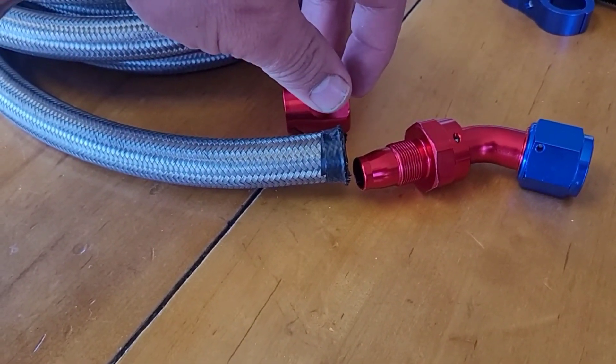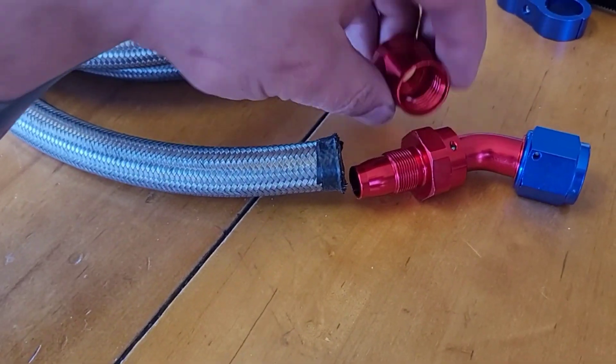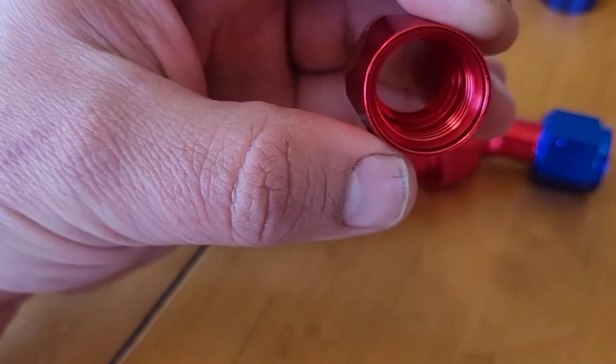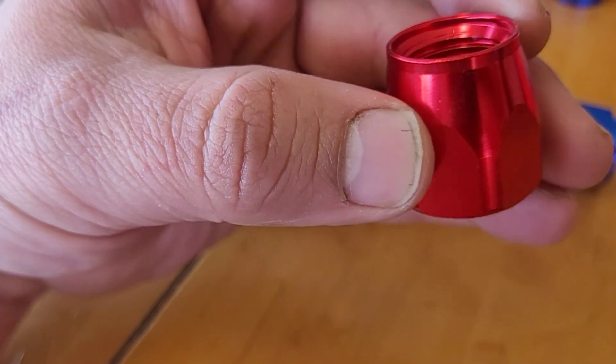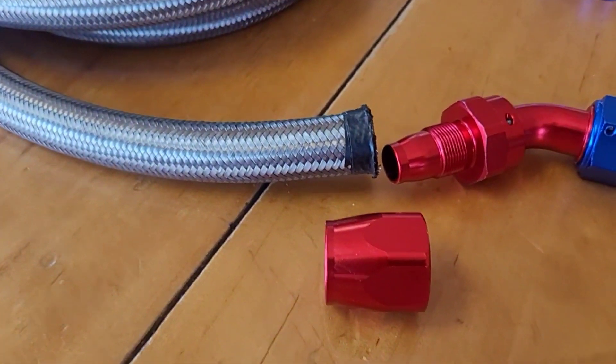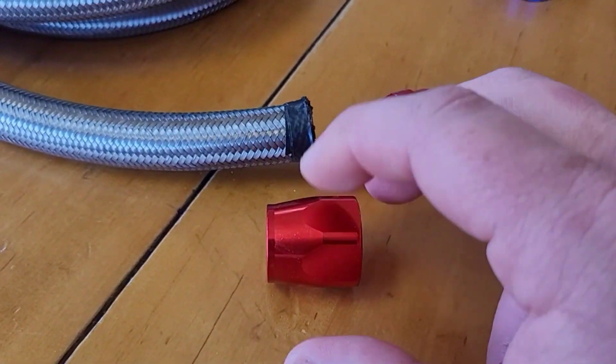So this collar is going to screw down onto the piece that you just cut. So, again, lubrication, lubrication. It's going to go on the outside of your piece. You're going to hold that. And then see how there's a taper that's going to go inside the hose.